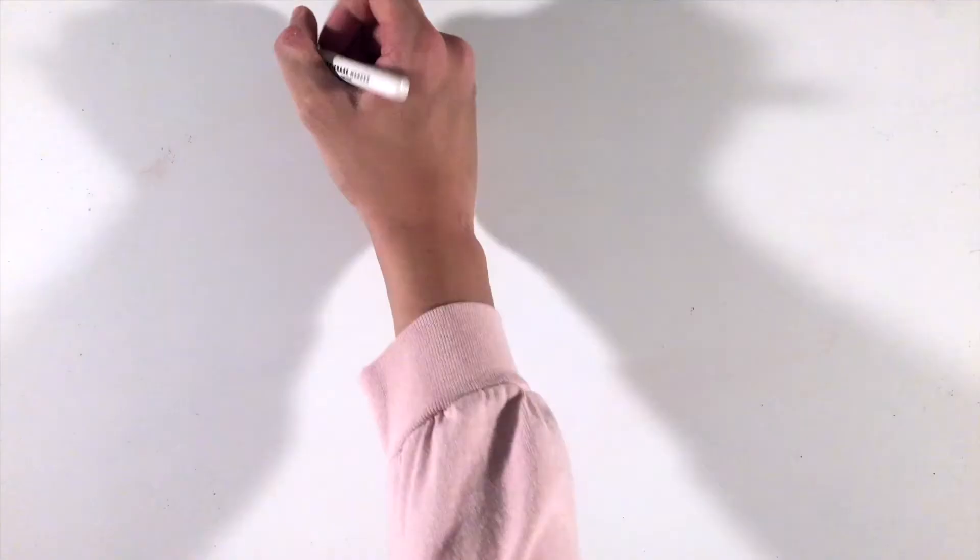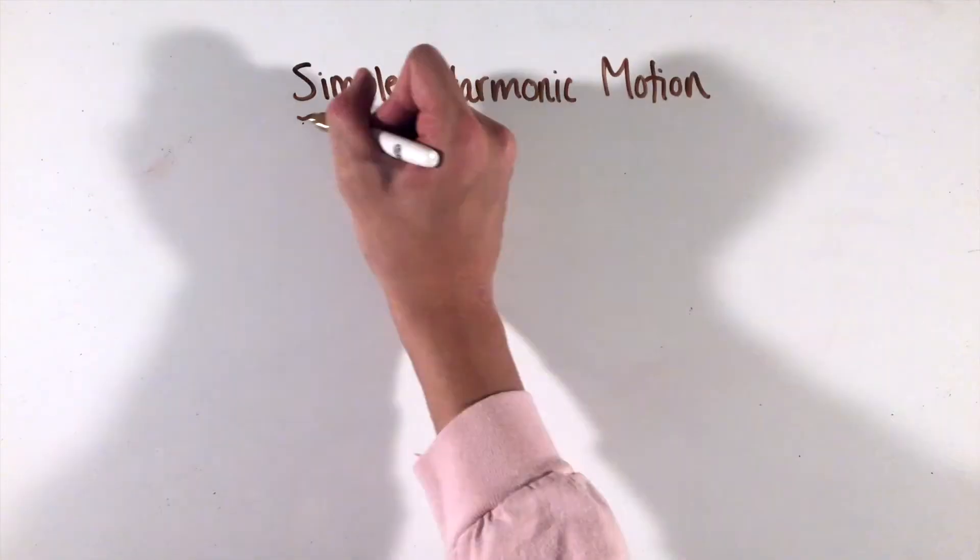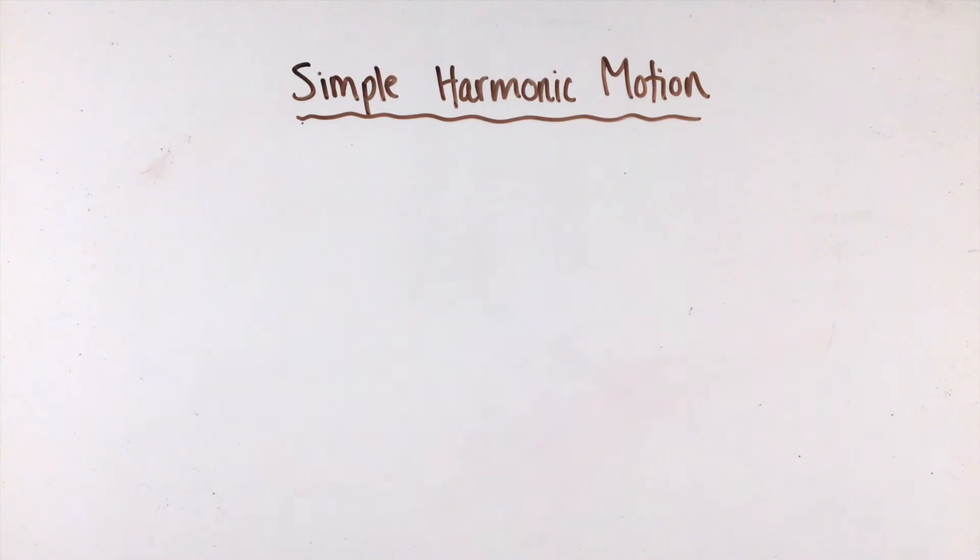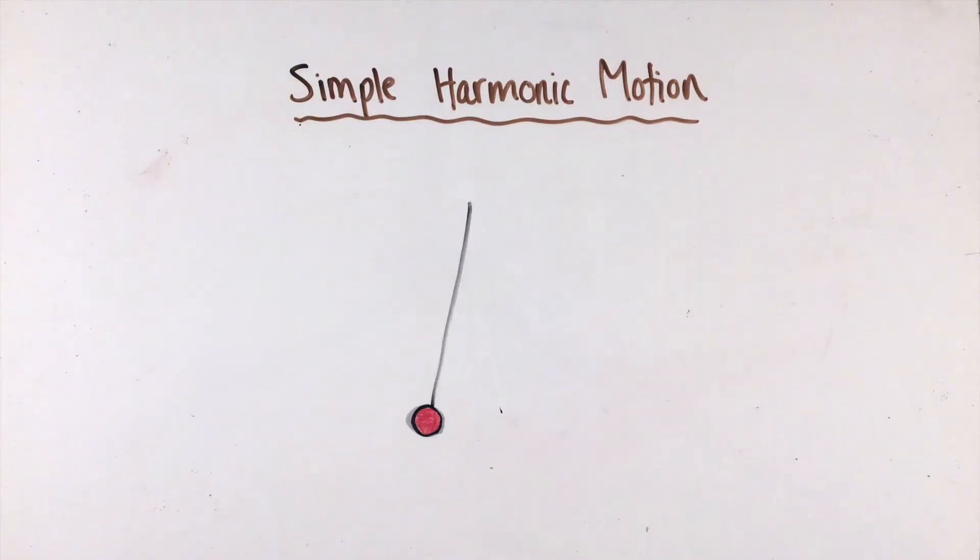In AP Physics 1, one of the more complicated and specific types of motion in the curriculum is known as simple harmonic motion. In general, simple harmonic motion is a cyclical form of motion known as oscillations, produced by objects moving under the influence of a restoring force.